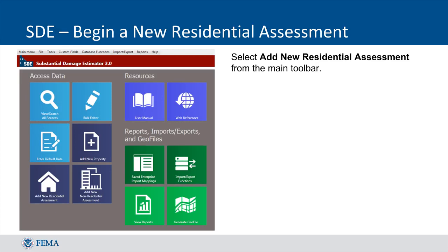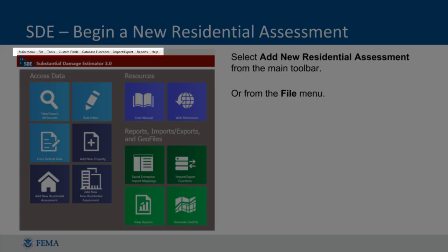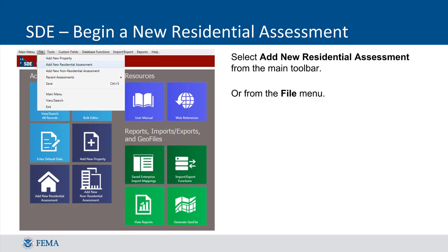First, we'll cover how to add a residential assessment using the SDE Tool. Either click the Add New Residential Assessment icon on the home page, or navigate to the toolbar, click File, then Add New Residential Assessment. Both options bring up the same screen.